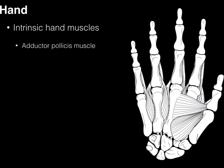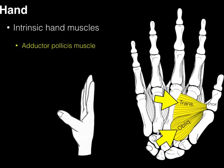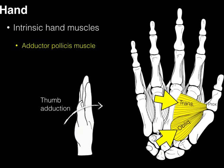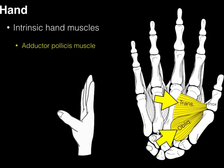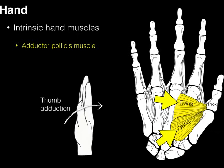Next is the adductor pollicis, which has a transverse head and an oblique head. Both heads come from the third metacarpal and carpal bones and insert on the proximal phalanx of the thumb. When this muscle contracts, it performs thumb adduction.